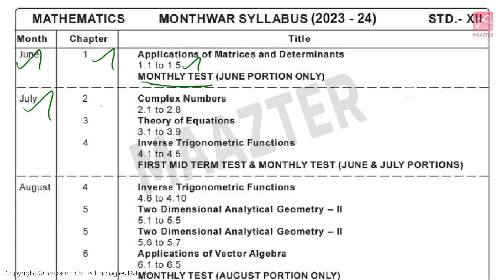Next, July. Chapter 2: Complex Numbers. Chapter 3: Theory of Equations. And Chapter 4: Inverse Trigonometric Functions — you will complete topics 4.1 to 4.5. The July monthly test portions cover Chapters 2, 3, and 4. The First Midterm test covers the June and July portions.